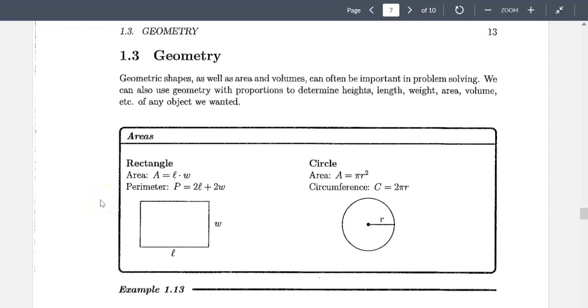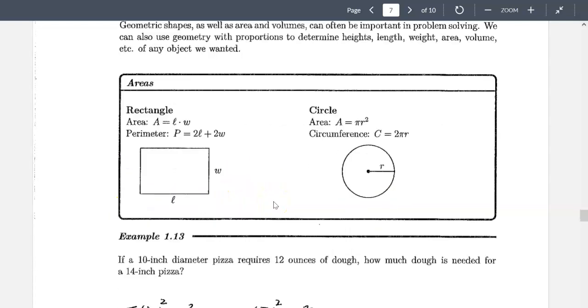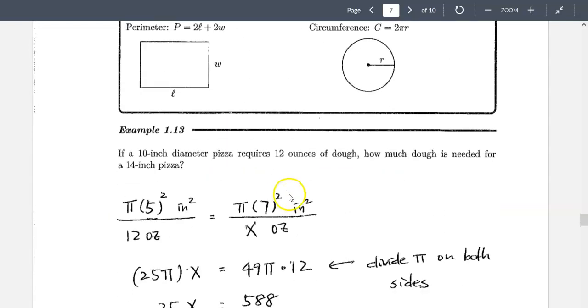Chapter 1.3 Geometry. We start with this chapter with some review of geometry basic formulas including area, parameters, area and circumferences for the circles. So let's take a look.